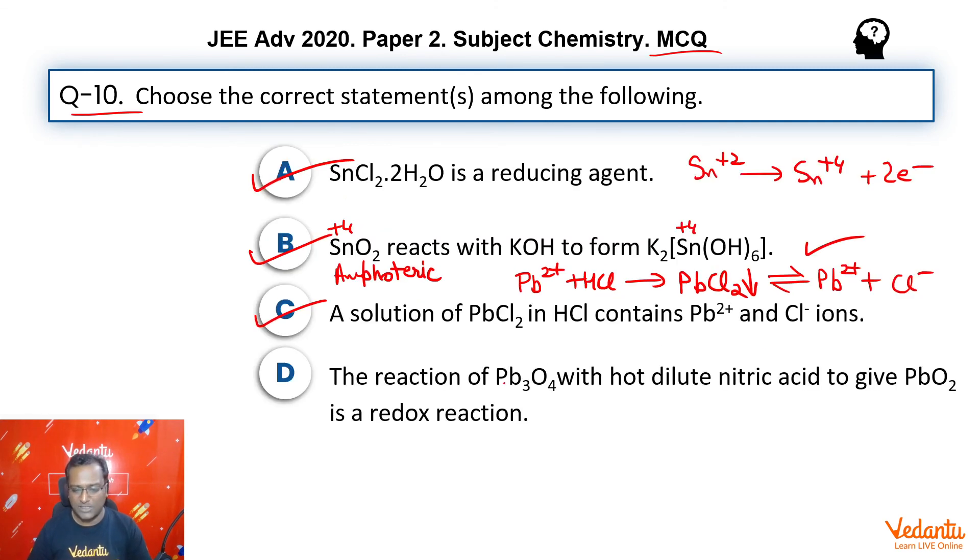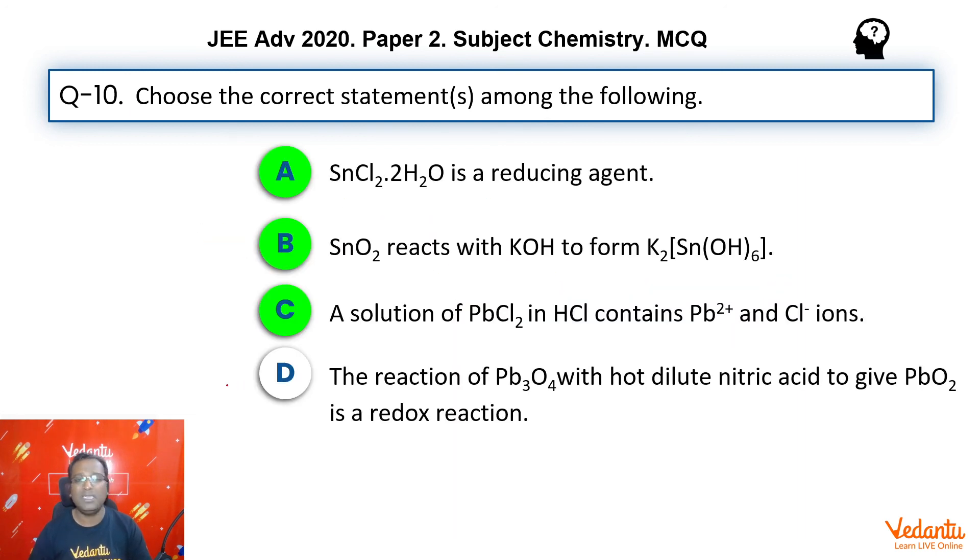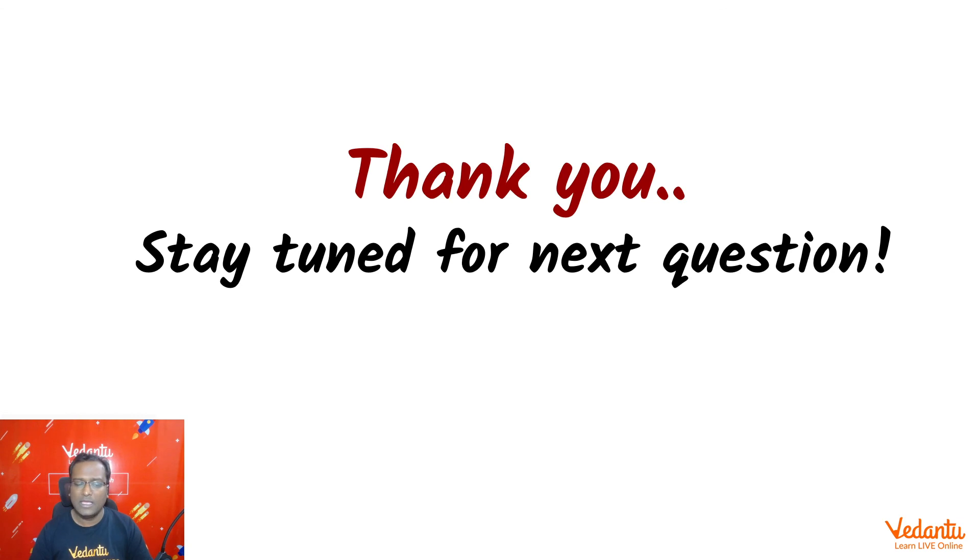So let's go back to our question. The reaction of Pb3O4 with dilute nitric acid to give PbO2 is a redox reaction. No, it's a non-redox reaction. So this is not the answer. So the answer is A, B and C. Stay tuned guys for the next question and thank you so much.